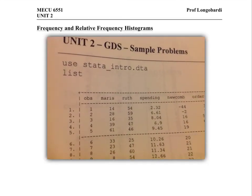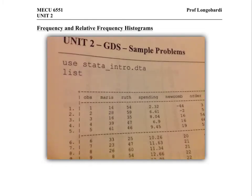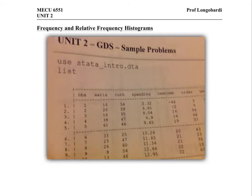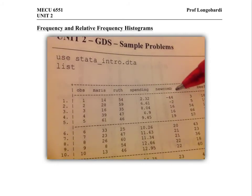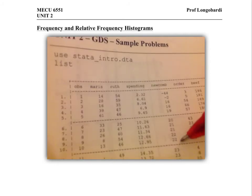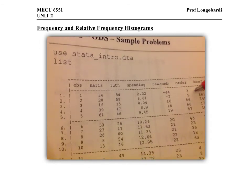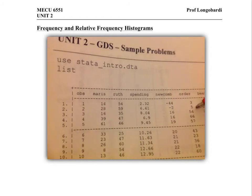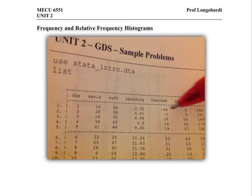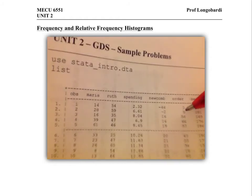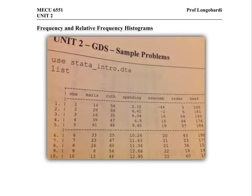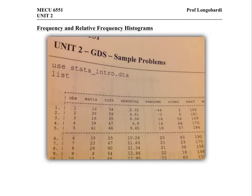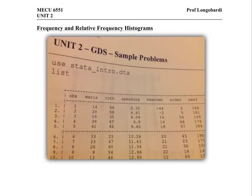If you go to page 3 of the sample problems notes, you'll see the column for Newcom's data right here. These are the values put in order, and this is their order number. So negative 44 was the third observation. Negative 2 was the fifth observation. If you want to read about what Newcom's data sample represents, you can find that on page 2 of the sample problems lecture notes.